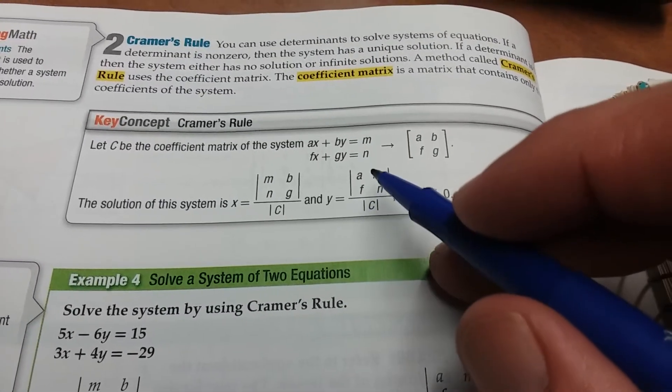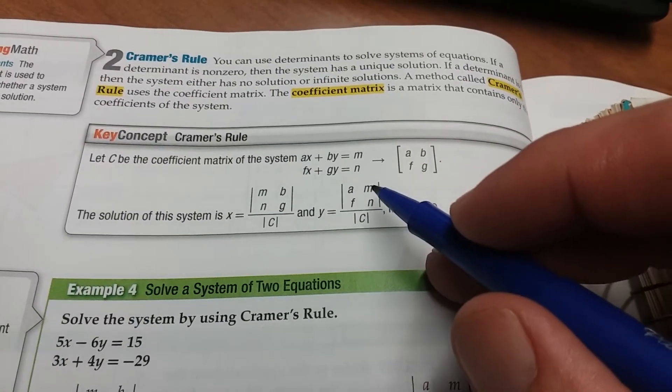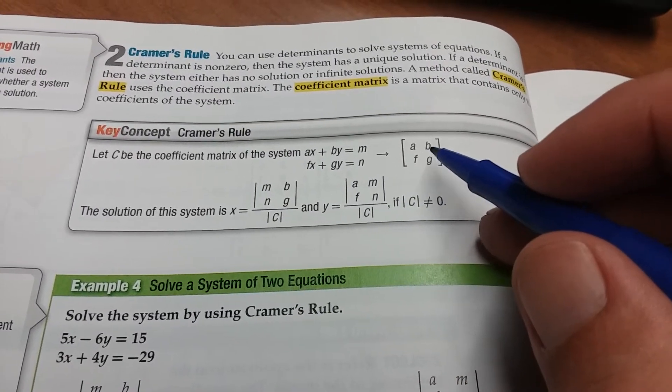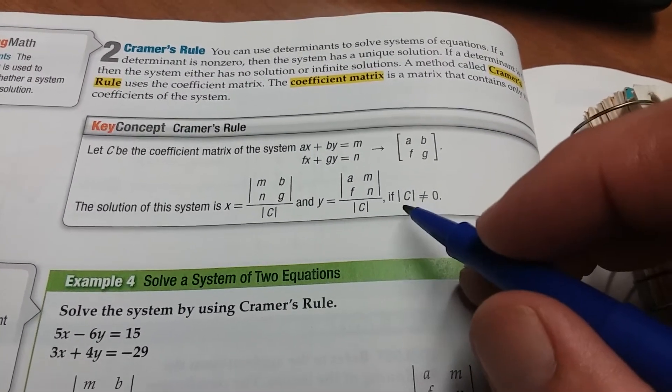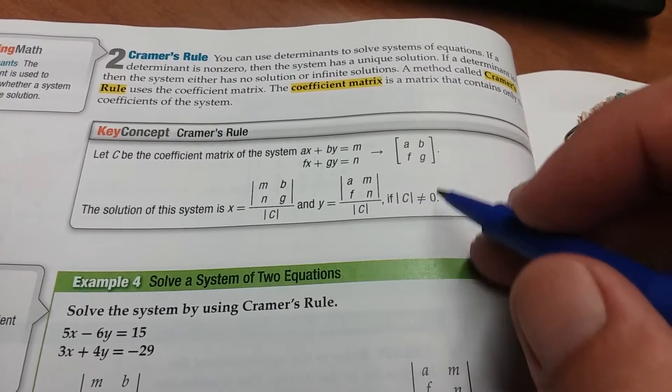Y is equal to the determinant of A over F, M over N, and that's divided by the determinant of this matrix again. And that's if the determinant of the coefficient matrix right here is not equal to zero.